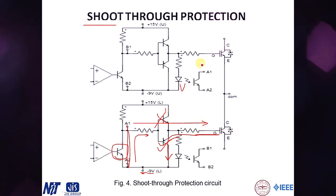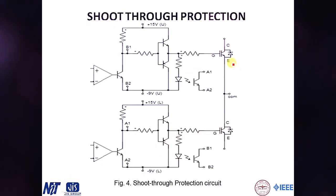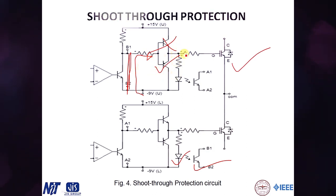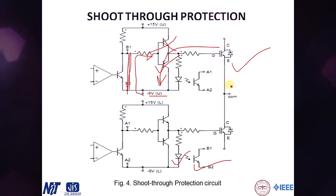In this way, when the upper IGBT is conducting there is no chance the lower IGBT will conduct. When the upper IGBT cycle completes and the lower IGBT is supposed to conduct, the same mechanism applies in reverse: the lower IGBT's optocoupler activates, holding the upper limb gate at negative potential, so any stray pulse trying to appear at the upper IGBT gate is neutralized. This completely avoids shoot-through faults.